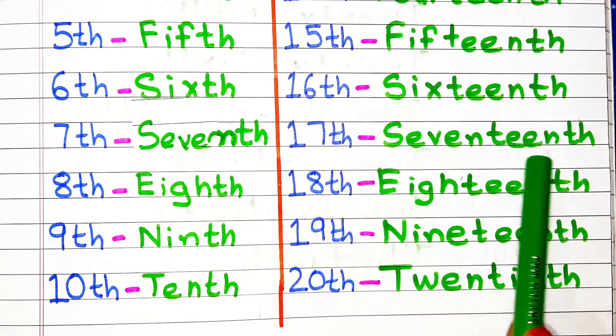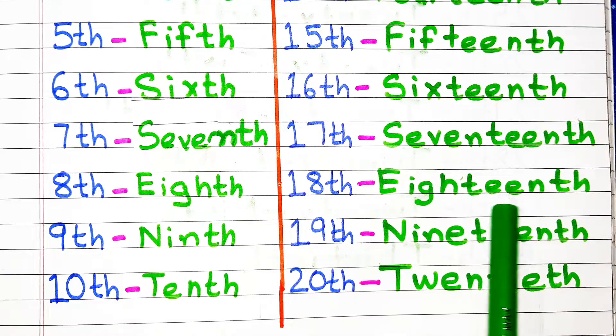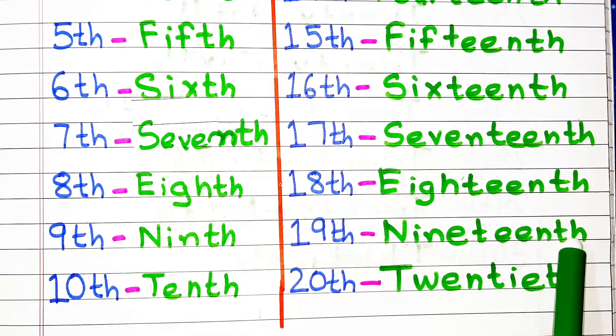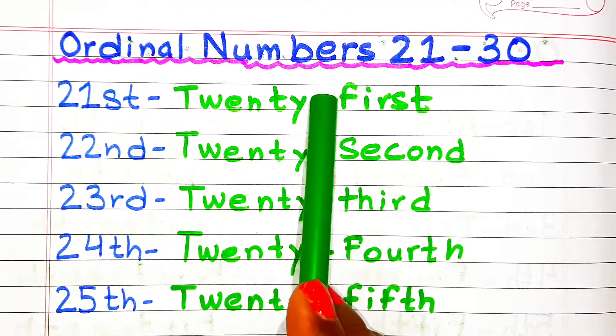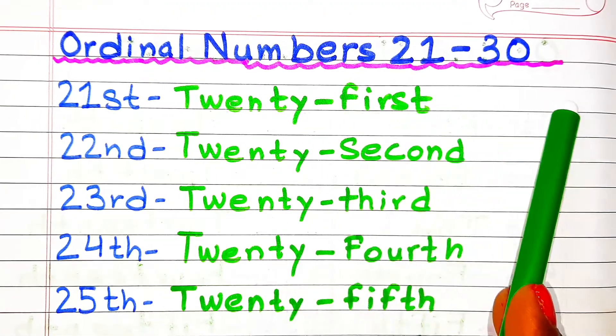Seventeenth, eighteenth, nineteenth, twentieth. Ordinal numbers from 21 to 30.